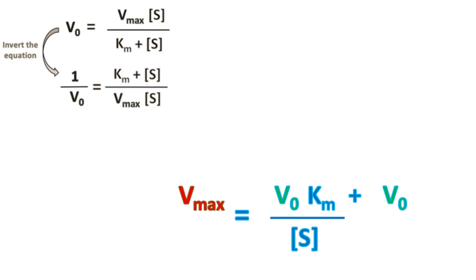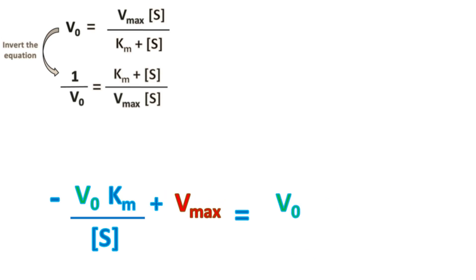Now, let's take V0 into Km upon S on the left-hand side, so we get minus V0 into Km upon S plus Vmax equals V0.